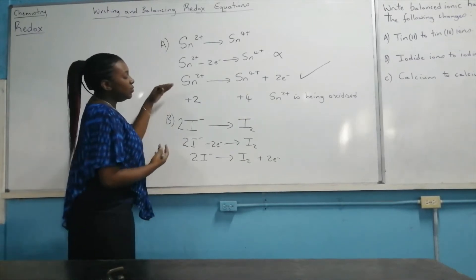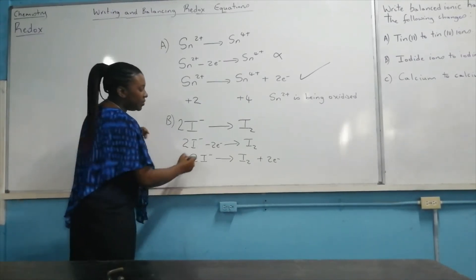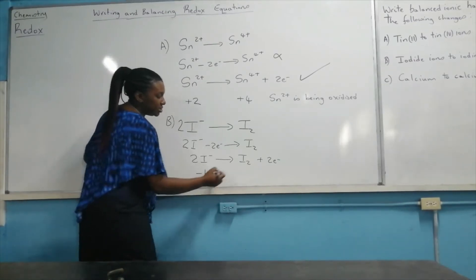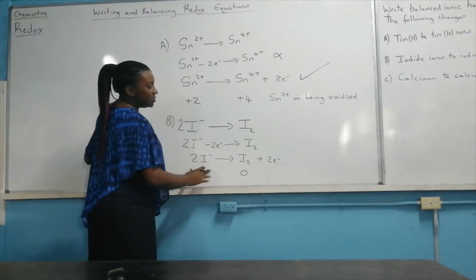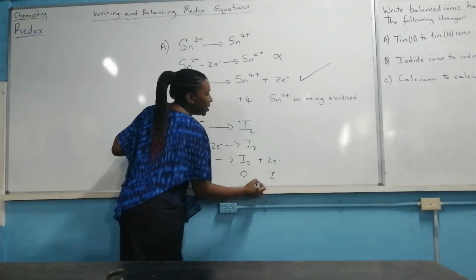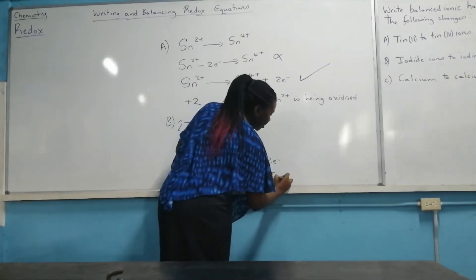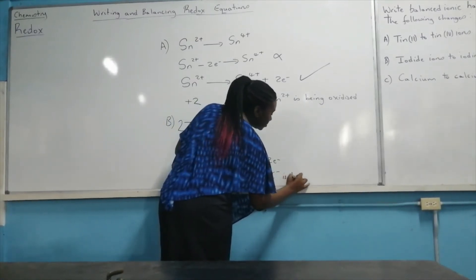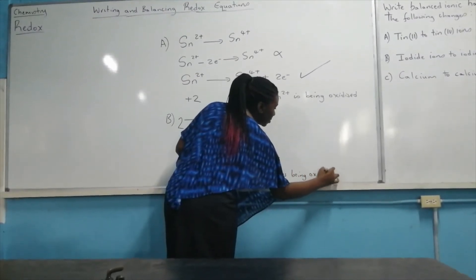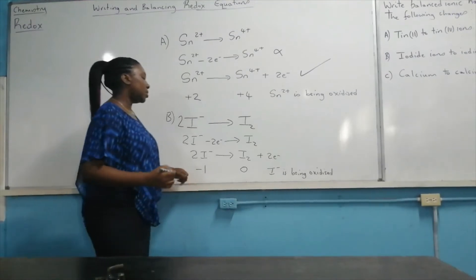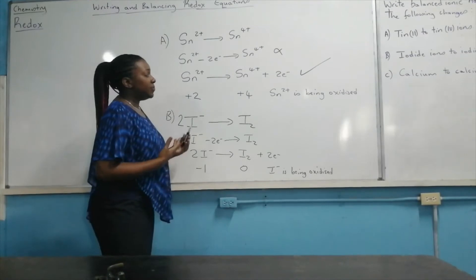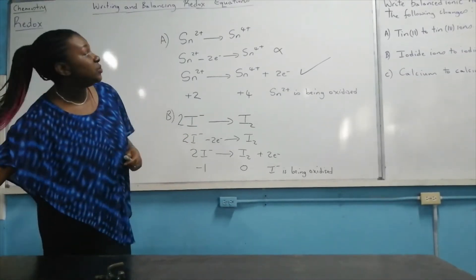Oxidation is taking place again. Iodine is moving from the minus one oxidation state to the zero oxidation state. There's an increase in the oxidation number, so iodide ions are being oxidized. There's another thing we need to do whenever we're writing these half equations — we have to show the state symbol.